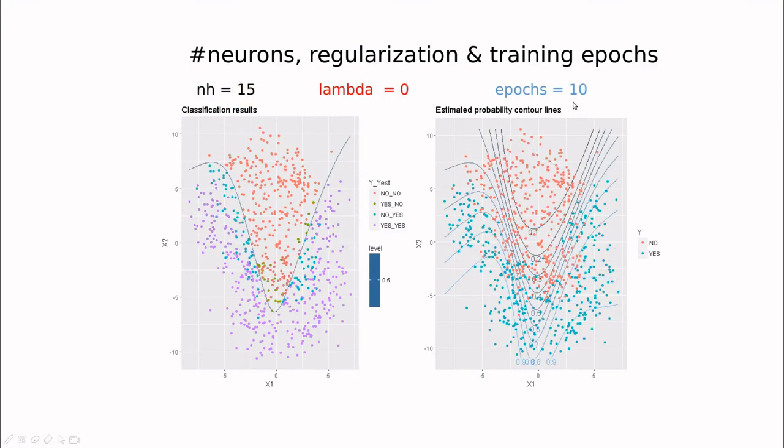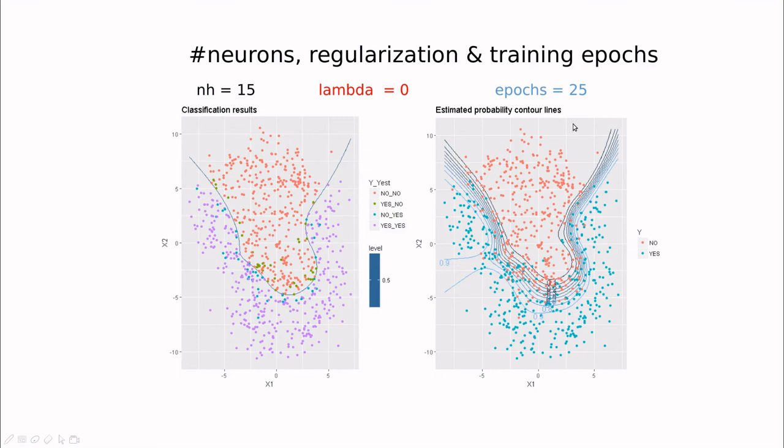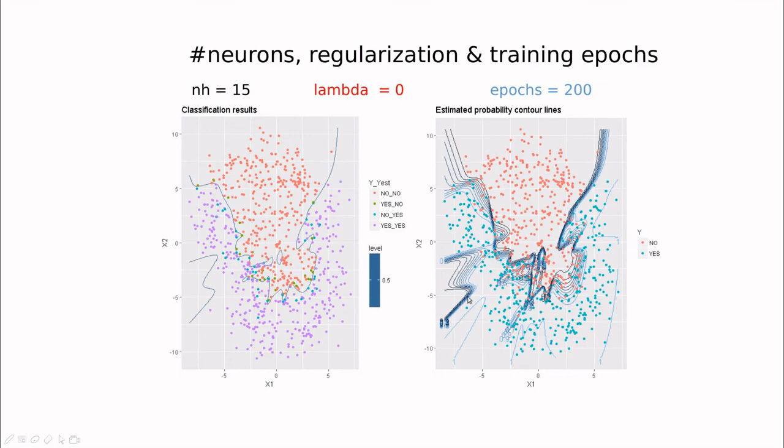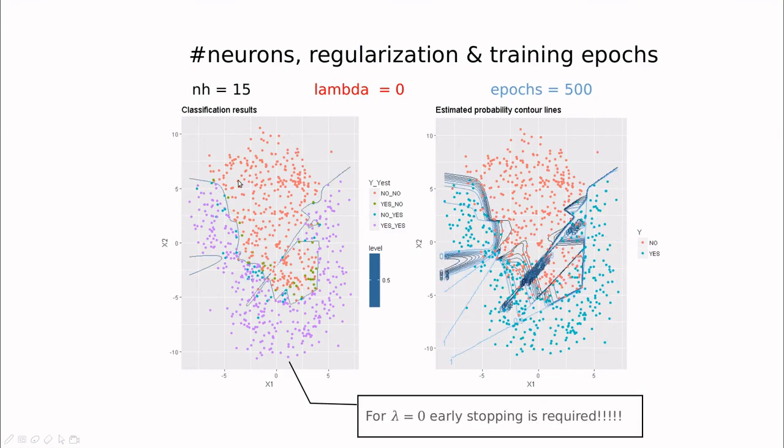When you increase the number of trainings, then you're moving around that landscape, and you can find something that is much better. But be careful, because if you train a lot, then you're going to try to explain things like this couple of points there, and this couple of points there implies that you're going to create a region here that doesn't exist.